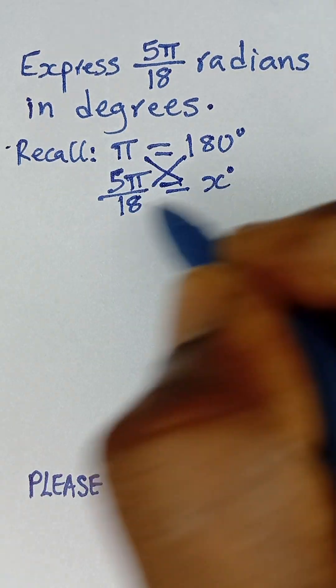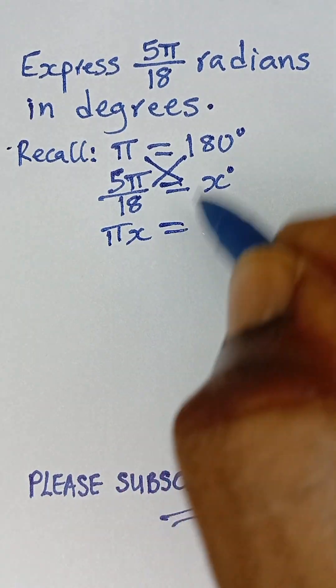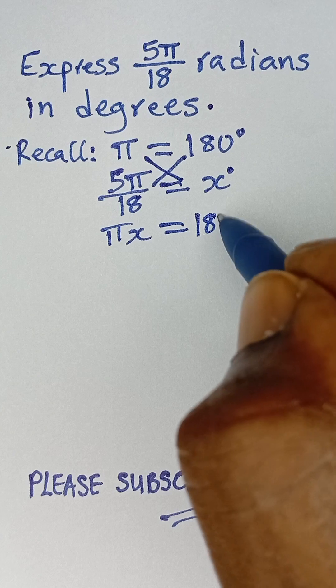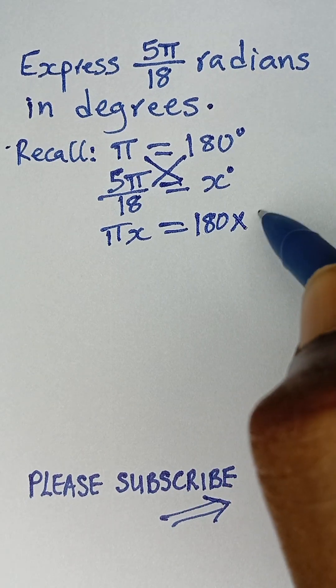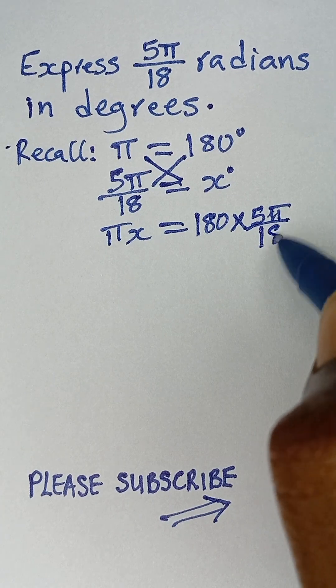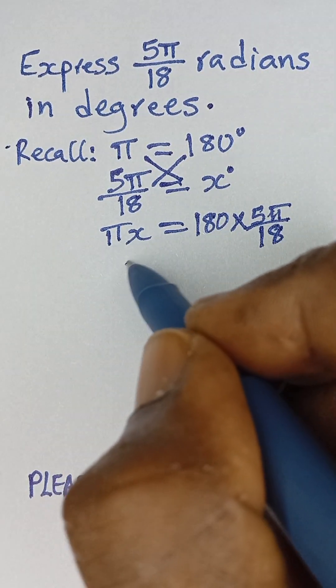Pi multiplied by x gives us πx equals 180 multiplied by 5π over 18. To get our x, we divide both sides by π.